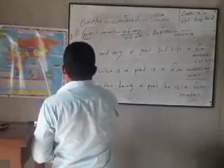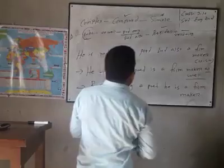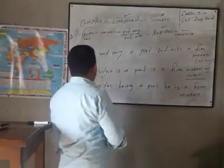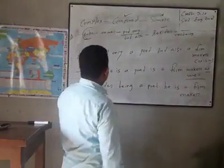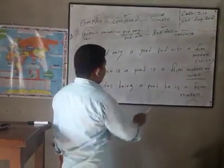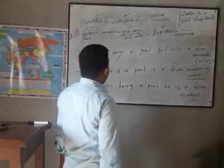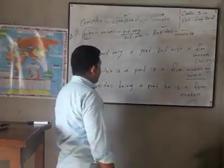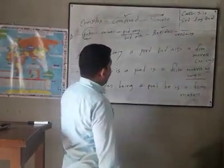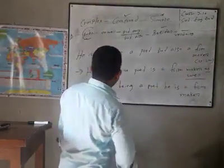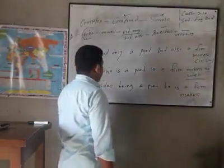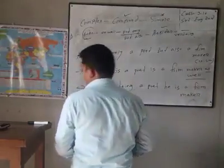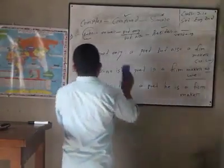Our question was: 'He is not only a poet but also a film maker.' In complex I have written: 'He, who is a poet, is a film maker as well.' And in simple sentence: 'Besides being a poet, he is a film maker.' That is our simple sentence.